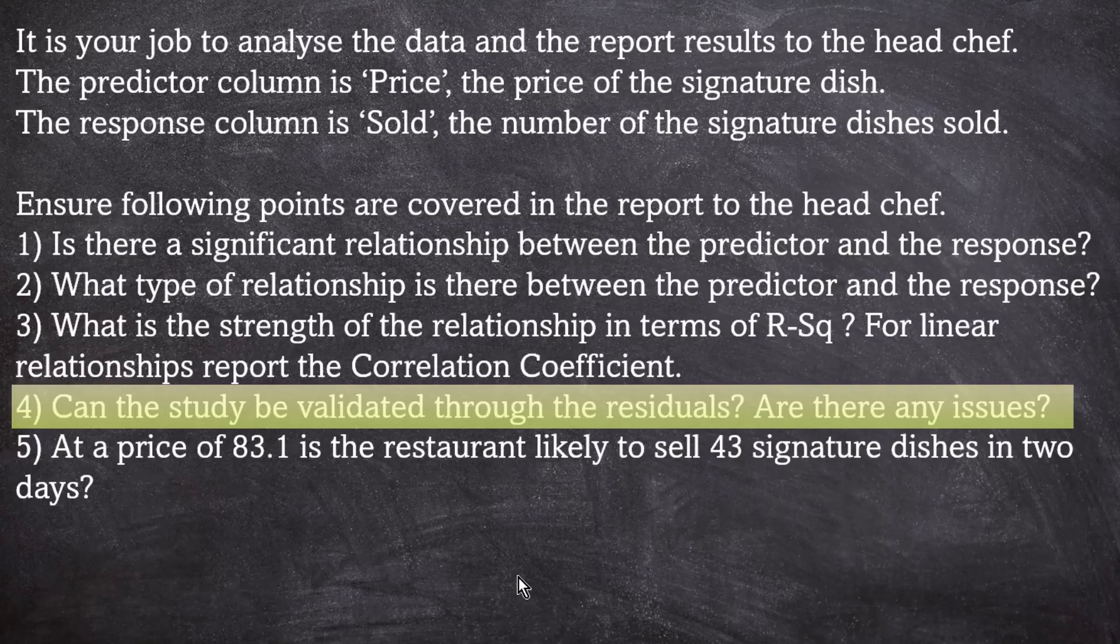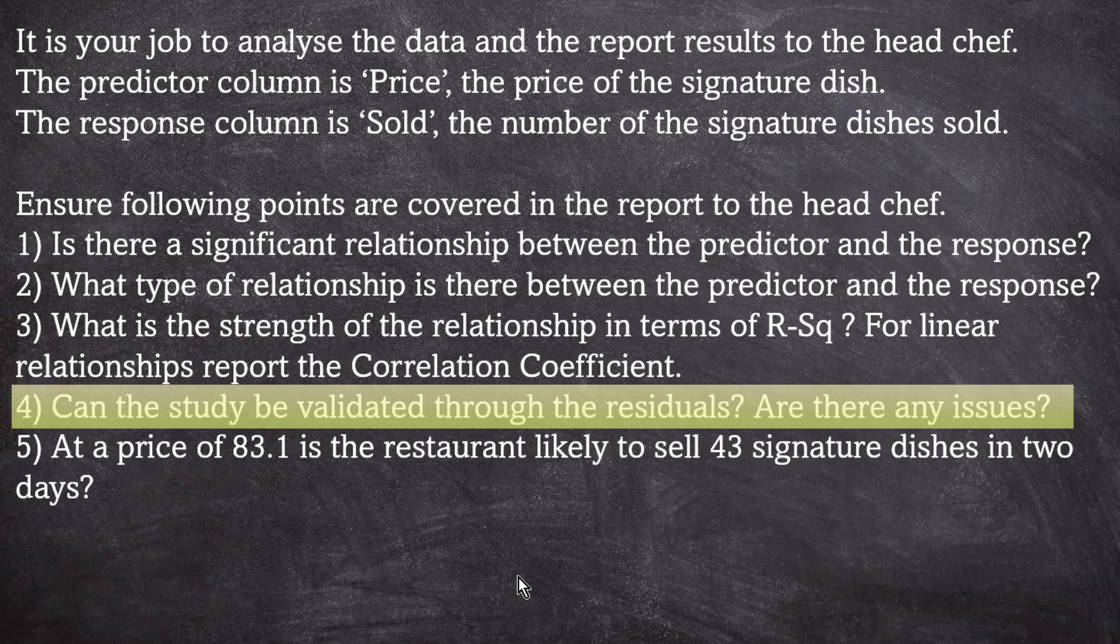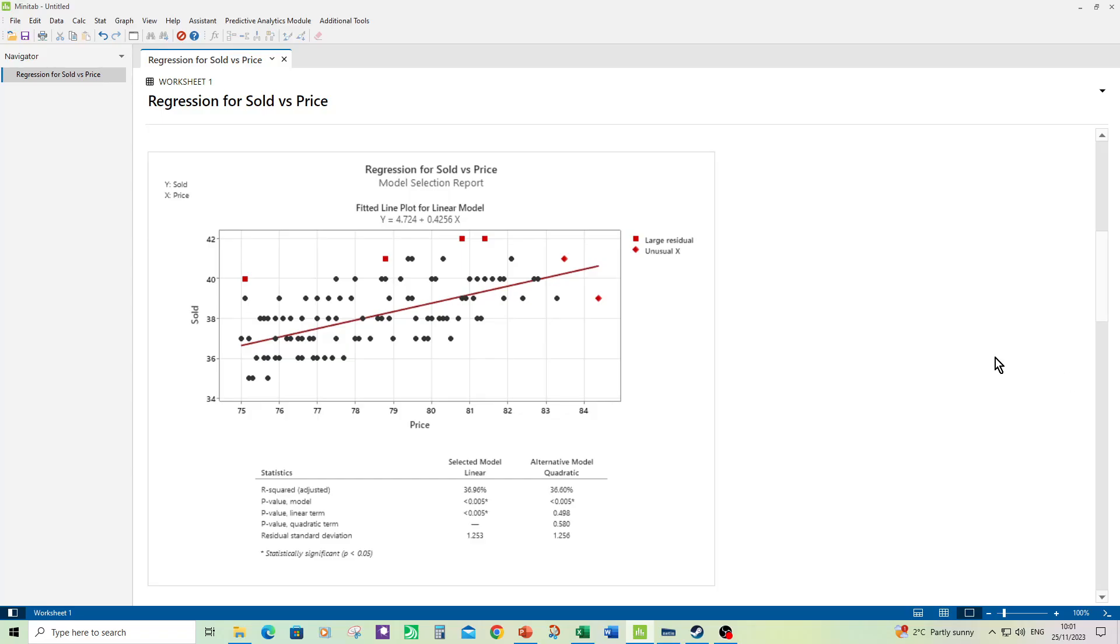Then we're on to number four. Can the study be validated through the residuals? Are there any issues? For that we can have a look at the model selection report. That reports on data points with large residuals and unusual residuals. Unusual residuals can have effect on the regression line because usually they're at either end and they can pull the line in a particular direction. So we've got one unusual residual above the line and one below. So hopefully they're pulling each way and they're going to cancel each other out. And the large residuals don't look too far from the normal body of the data. So I don't think they're having an effect.